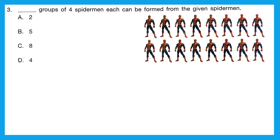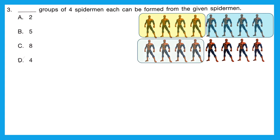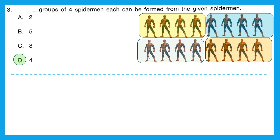Question 3: 'Dash groups of 4 Spiderman each can be formed from the given Spiderman.' Let's count — there are 16 Spiderman in total. Now we make groups of 4: first group of 4, second group of 4, third group of 4, and fourth group of 4. So we can make 4 groups of 4 Spiderman. The correct option is D.